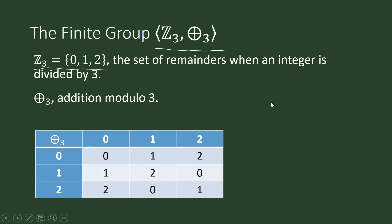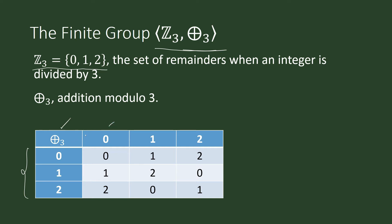This table represents our operation, addition modulo 3. We read it starting from elements in the first column: 0+0 mod 3 = 0, 0+1 mod 3 = 1, 0+2 mod 3 = 2. Then 1+0 = 1, 1+1 = 2.